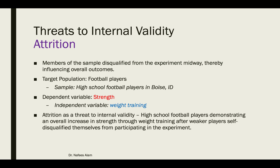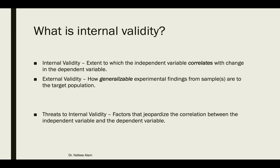To recap: internal validity is the extent to which the independent variable correlates with change in the dependent variable. External validity is defined as how generalizable experimental findings from the sample are to the target population. And the examples we've gone through fall under the umbrella category of threats to internal validity — factors that jeopardize the correlation between independent variables and dependent variables.